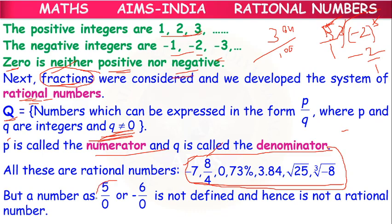However, numbers like phi by 0 or minus 6 by 0 are not rational numbers. As stated in the definition, q should never be equal to 0 — the denominator should never be equal to 0. So anything divided by 0 does not exist. Rational numbers are those which are in the form of p by q, or which can be written in the form of p by q, where p and q are integers and q is not equal to 0.